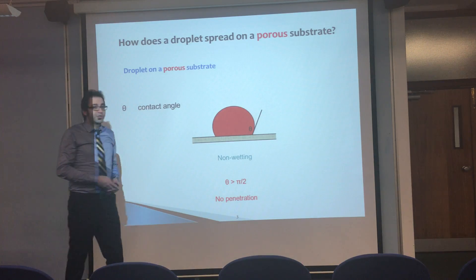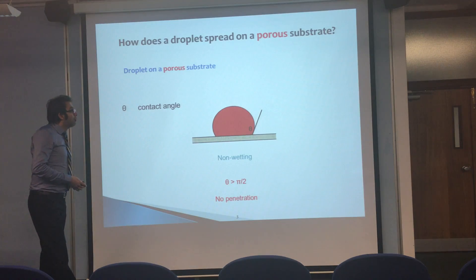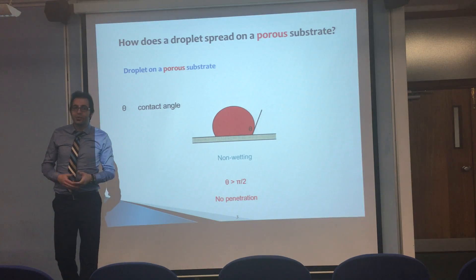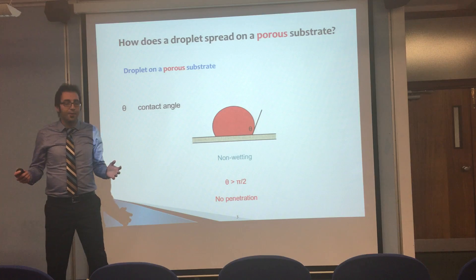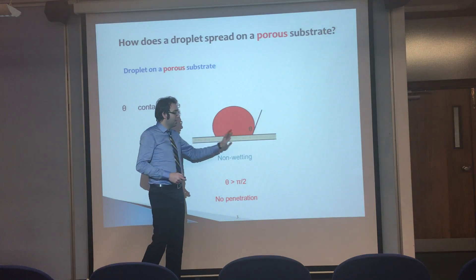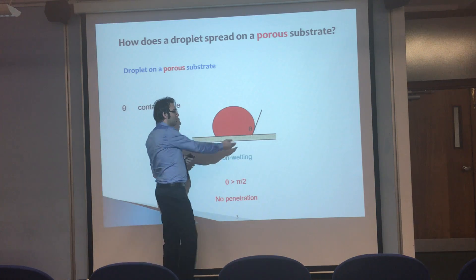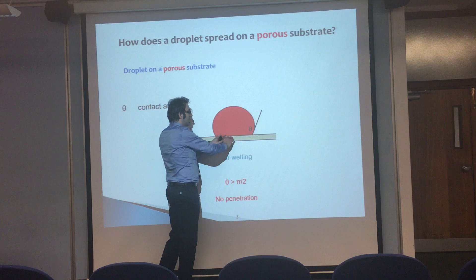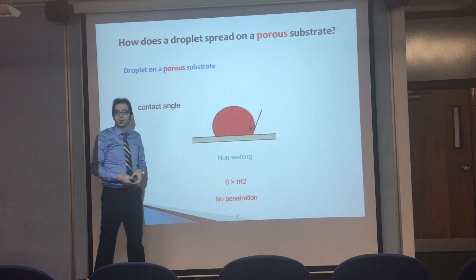Now the question is: how does a droplet spread on a porous substrate? In the case of drops spreading on a porous substrate we also have three different types of behavior. The first case is non-wetting behavior, where the contact angle is always higher than 90 degrees, the droplet stays on top of the porous layer, and there is no penetration inside the porous substrate.